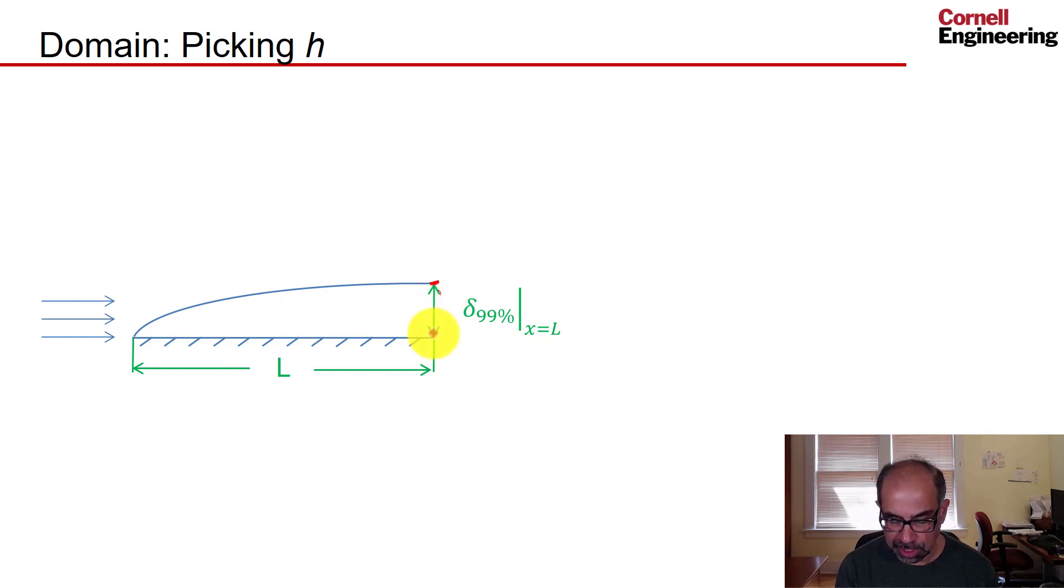I said I will pick h to be 10 times this boundary layer thickness, and the 10 is a little bit arbitrary, it's based on experience. I could have picked 15 for instance. In fact, I should check that when I change h from 10 to 15 the solution doesn't change.